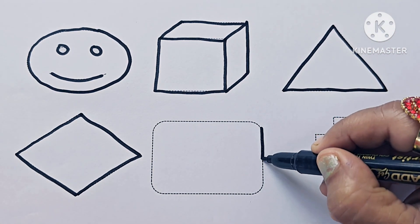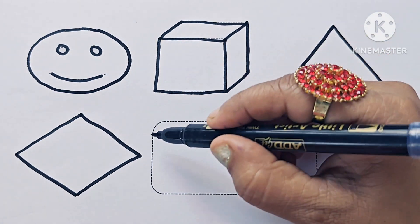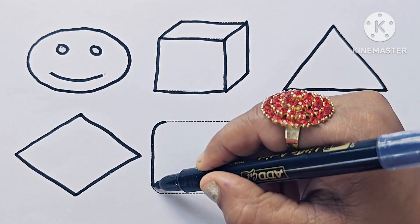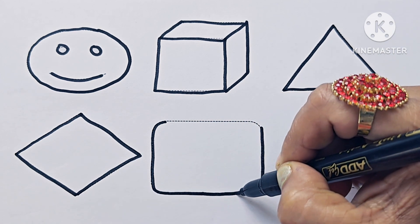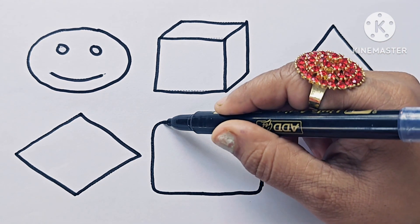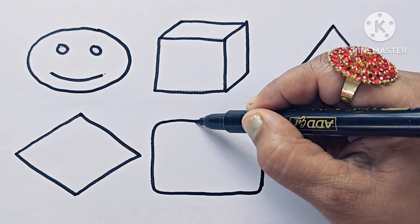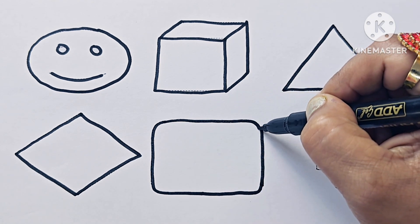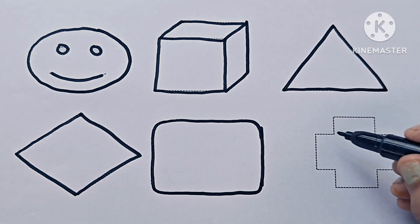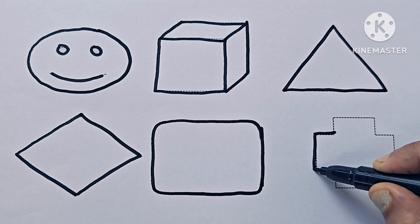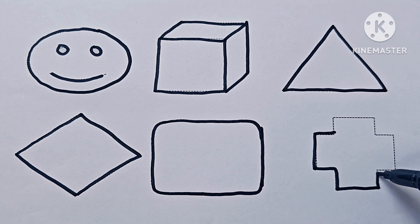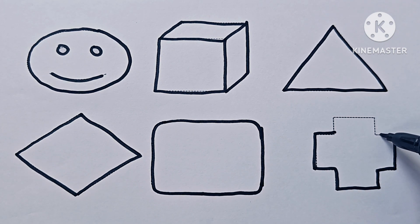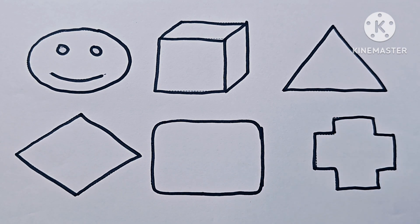This is a rounded corner rectangle. It is a rectangle but its corners are round. This is a cross. It looks like the addition symbol.